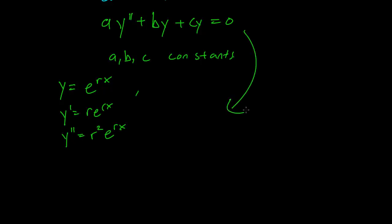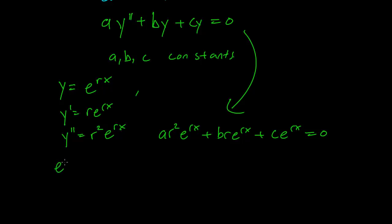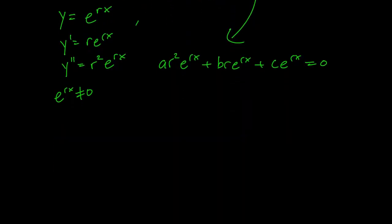So this equation, this change of variables, will get us a r squared e to the rx plus b r e to the rx plus c e to the rx equals zero. But here's the thing — remember that exponential functions are always non-zero. So this means that we can just divide out e to the rx without fear of any consequences, giving us a r squared plus b r plus c equals zero.